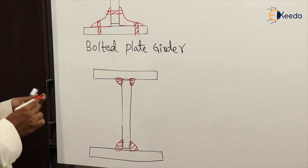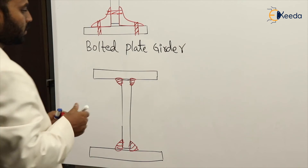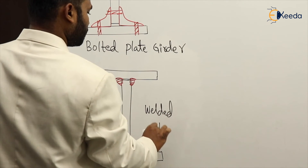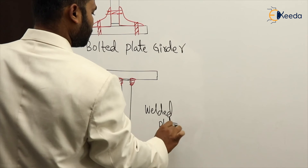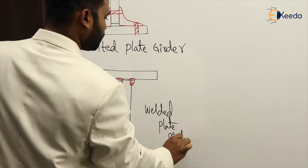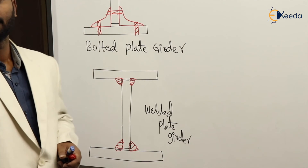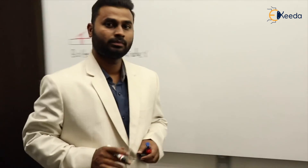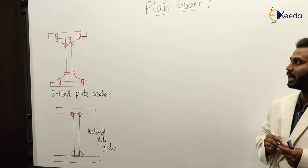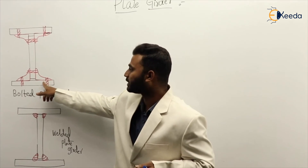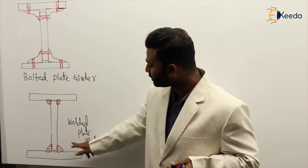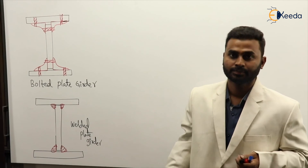This is the welded plate girder. If we connect these three plates by using bolts, it is called a bolted plate girder, and if we connect them by using weld, it is known as a welded plate girder.